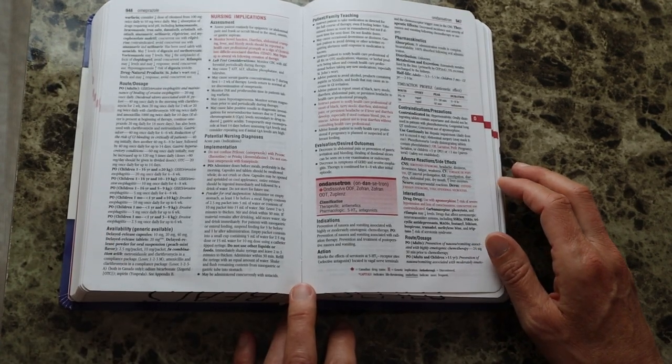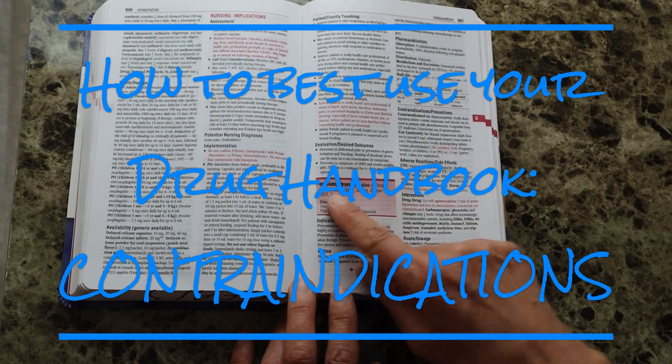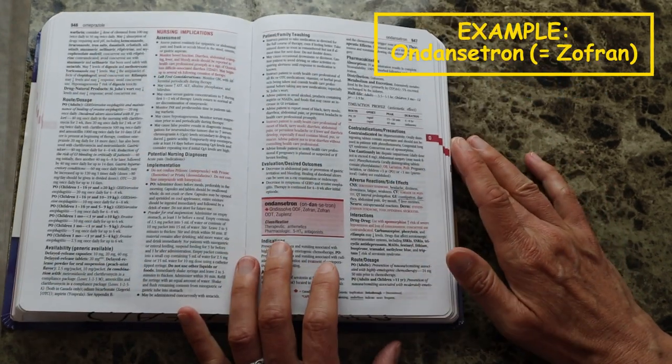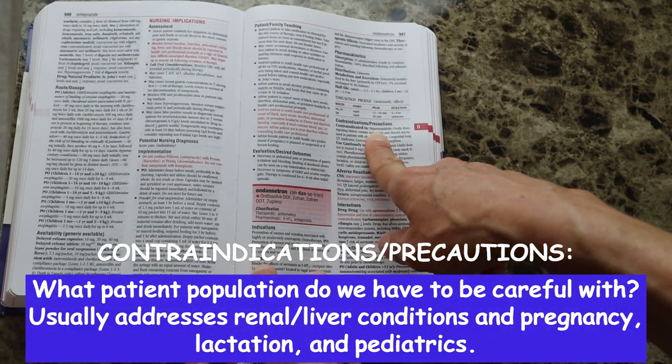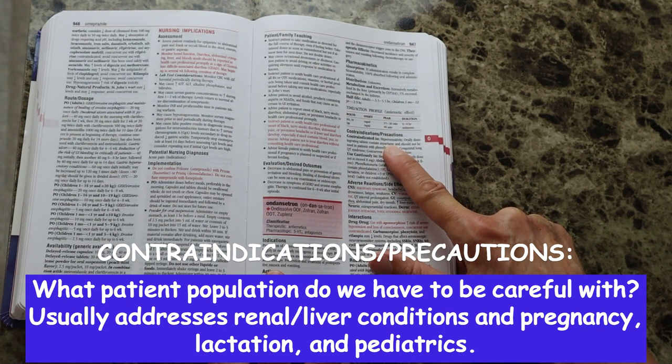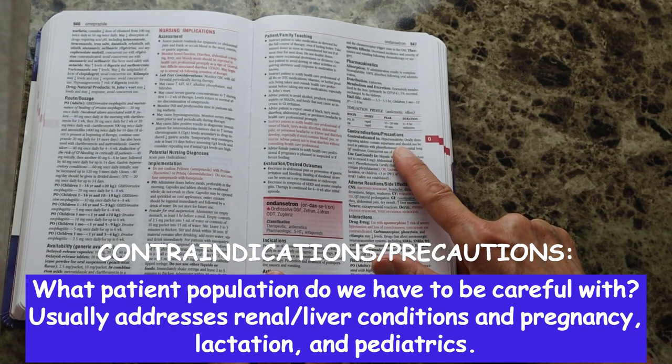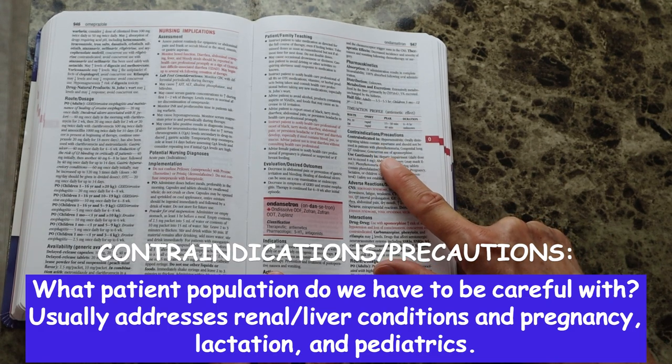Now we are still here reviewing the F.A. Davis Drug Guide for Nurses, and we're on Ondansetron in the next section under contraindications and precautions. So those are the ones that we need to make sure that we double check - when is it contraindicated, so what patients should we not give this medication.